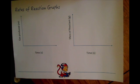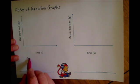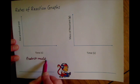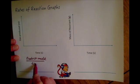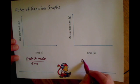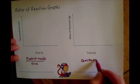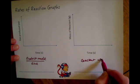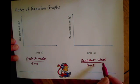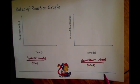In the previous video we discussed the two different ways which can measure the rate of reaction. You can either measure it by the product made over time, or by how much reactant is used up over time.